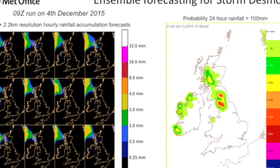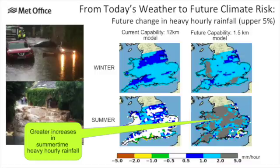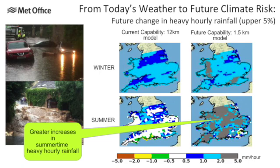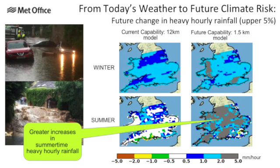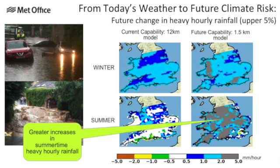We can take that capability shown for Storm Desmond and use it to look at future climate risk. This is an example from work published at the Met Office over three years ago, taking that fine-scale model and seeing what it tells us about heavy hourly rainfall — the upper five percent — where we get very intense bursts of rainfall that tend to cause flash flooding.